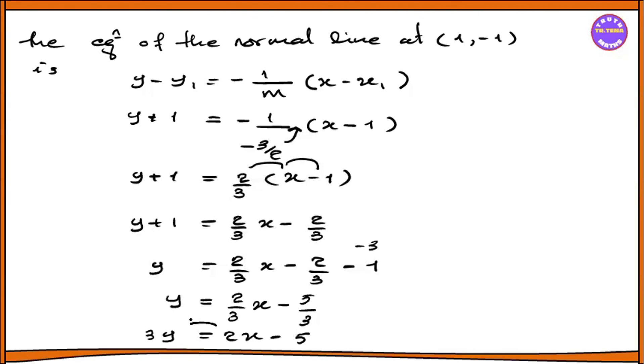Multiplying by 3: 3y equals 2x minus 5. Rearranging: minus 2x minus 3y equals 5, or 2x plus 3y equals minus 5. So this is the normal line equation.